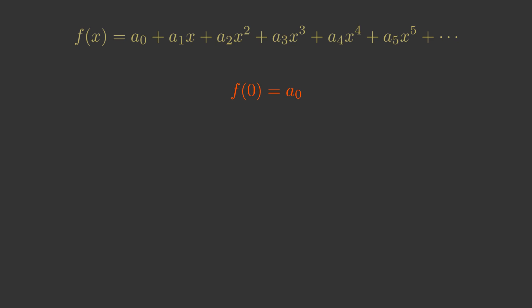We can now make our first approximation to the function. We know the value of a0 but we don't know any other coefficients, so we will say that f of x is approximately equal to a0.